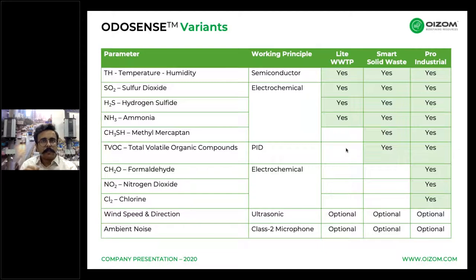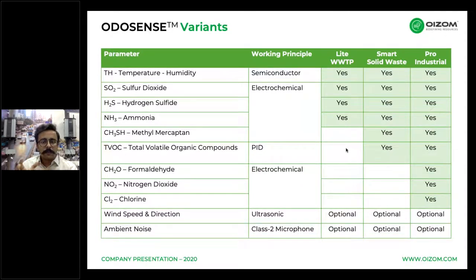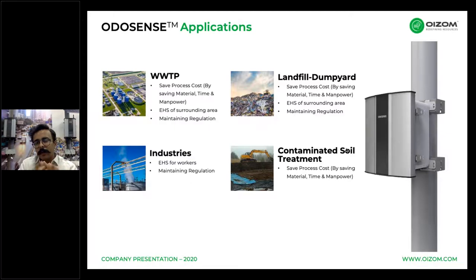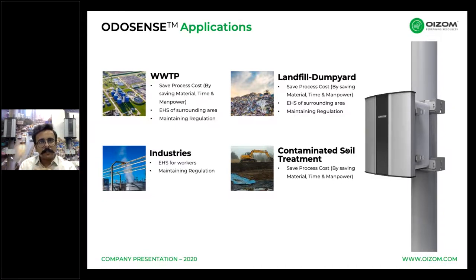Solid waste landfills may be equipped with the Smart version, while the Pro version — which also measures formaldehyde and chlorine — is for industrial applications. Wind speed and direction assist in source tracking of odors. Major sources include landfills and underperforming sewage and effluent treatment plants that release unwanted odors, leading to harmful atmospheric conditions for nearby residents. When combined with industrial odors, this forms a dangerous combination, sometimes leading to fatality, and odor monitoring helps in taking corrective actions.